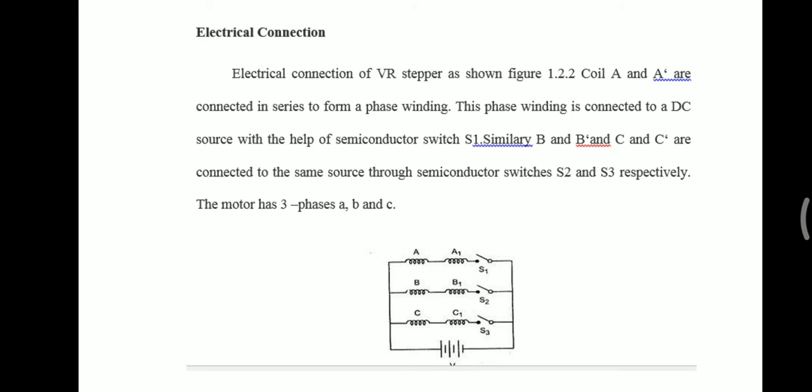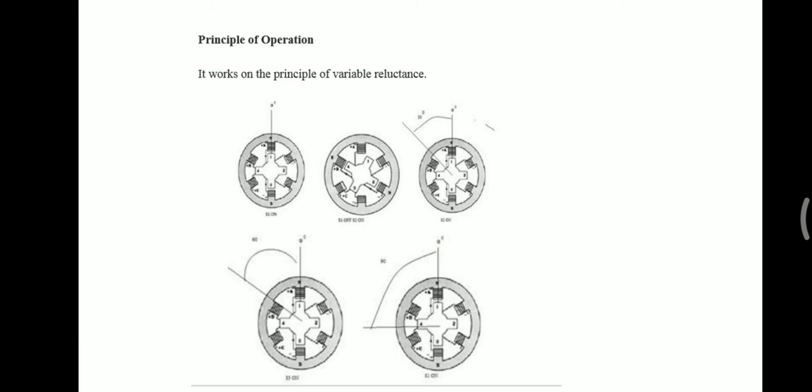When it comes to the principles of operation of VR stepper motor, there are three different modes of operation. Mode 1 is one phase on. It works on the principle of variable reluctance. Here you can see the diagram of different rotor rotations. Mode 1, one phase on or full step operation.